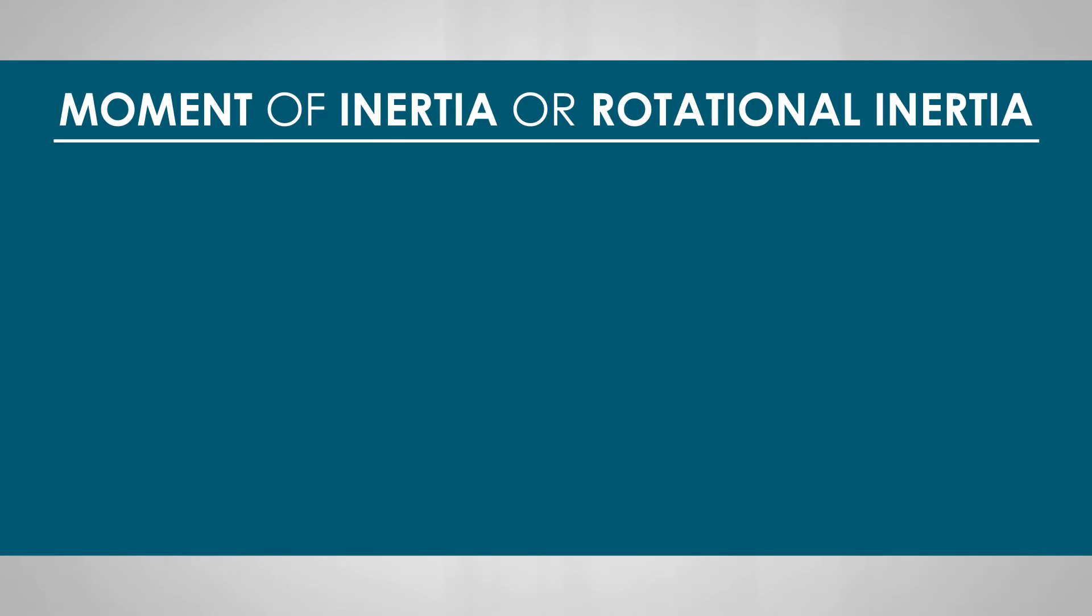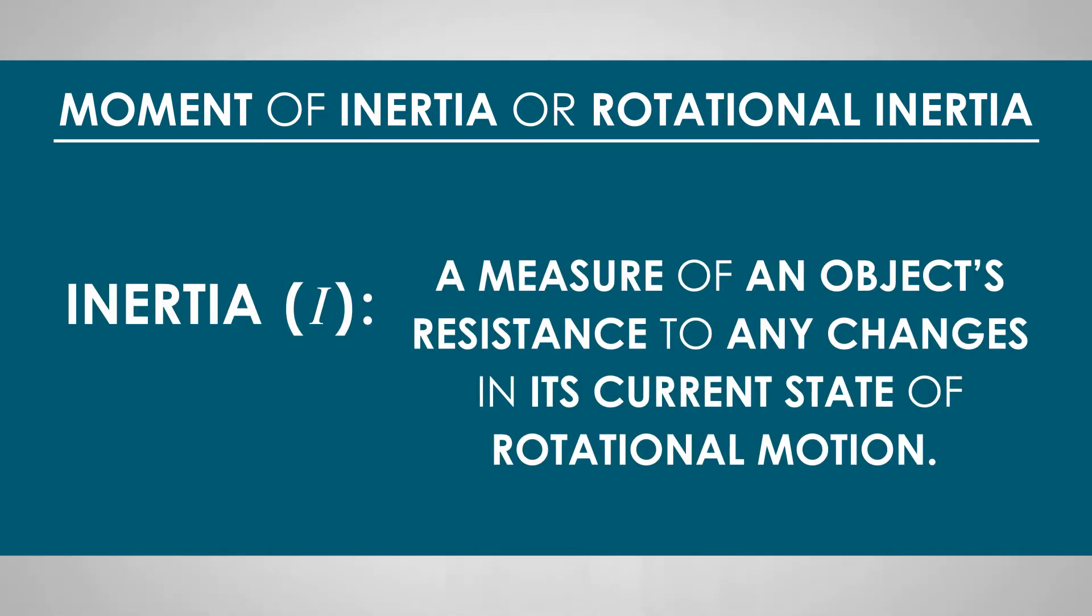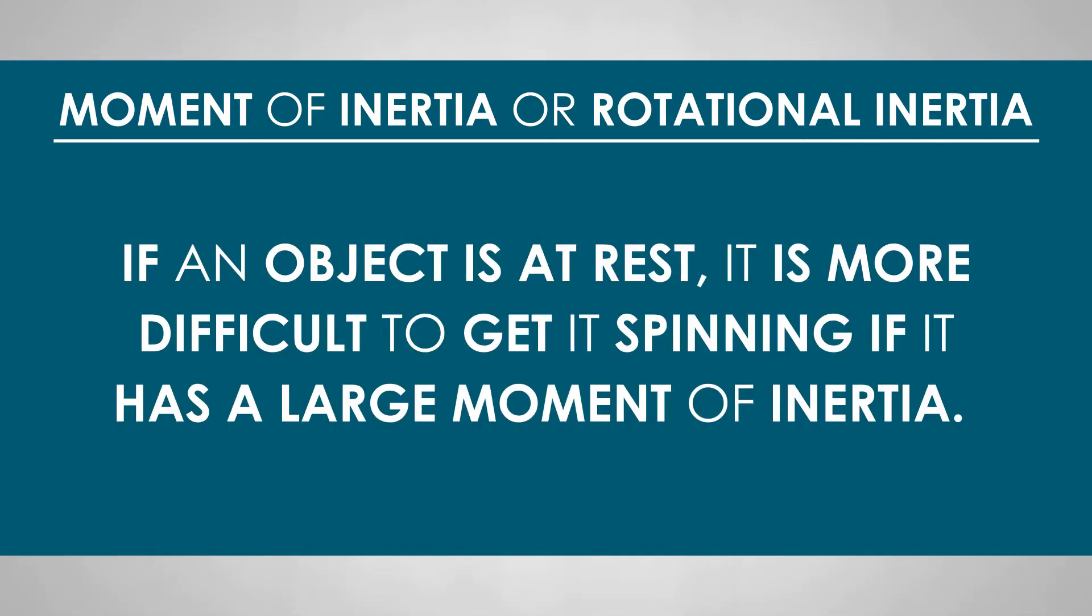Moment of inertia, or rotational inertia, is a measure of an object's resistance to changes in its current state of rotational motion. The larger the moment of inertia, the harder it is to change the angular speed or direction of rotation of an object. In simpler terms, if an object is at rest, it is more difficult to get it spinning if it has a large moment of inertia.